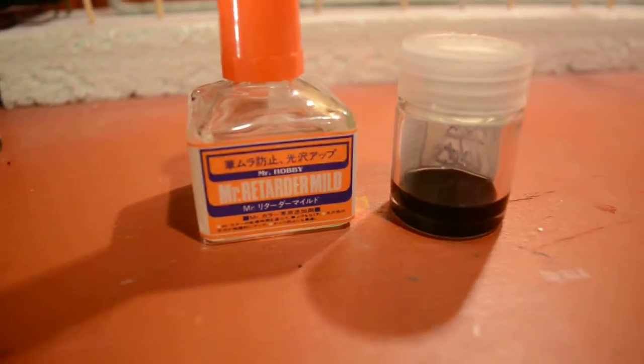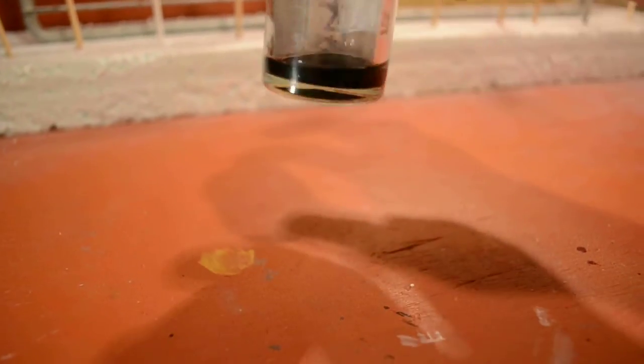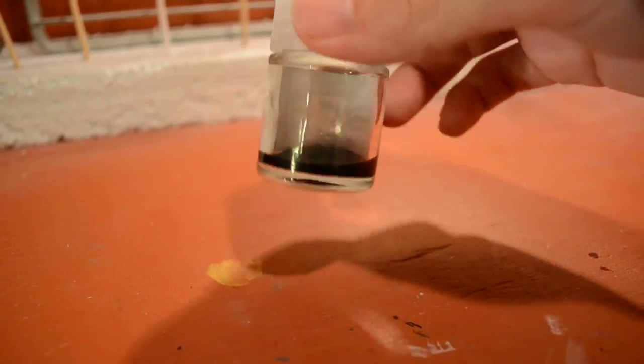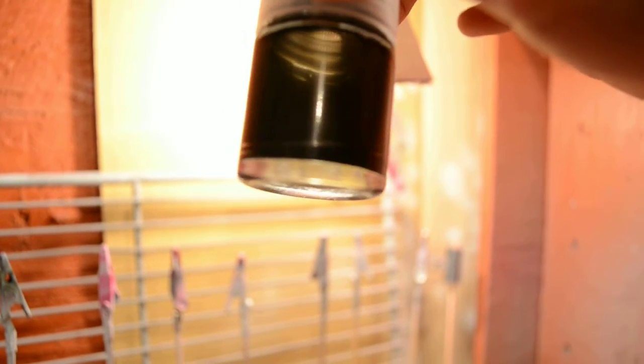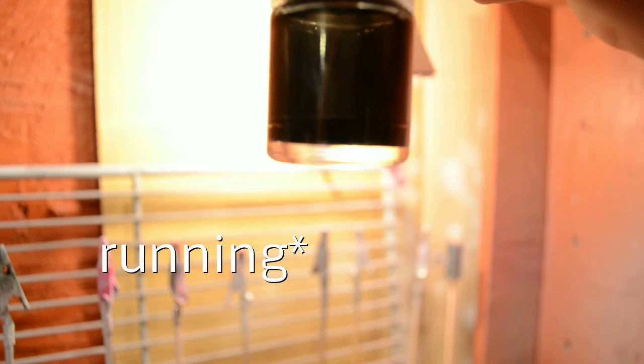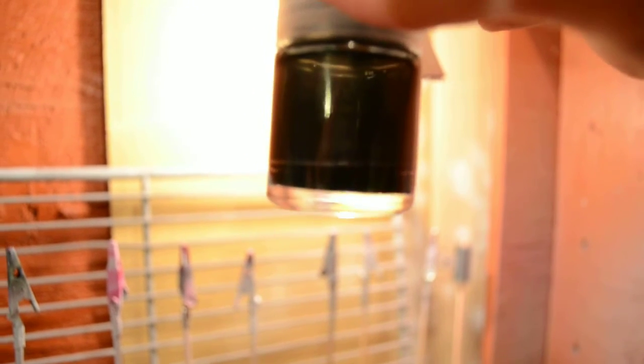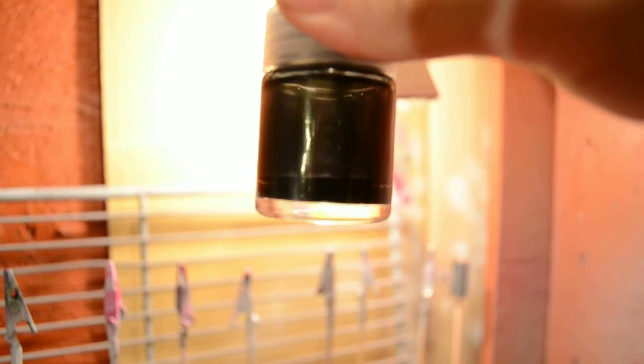Now what you want to do is just take the bottle and shake it well. This one is a little too thick—the paint is not going down the jar as fast as it should—so I'm actually going to add a little more thinner. But basically that's how it's done.